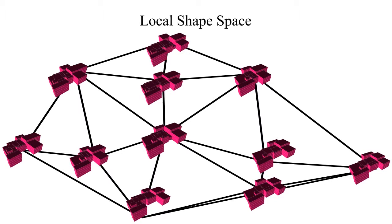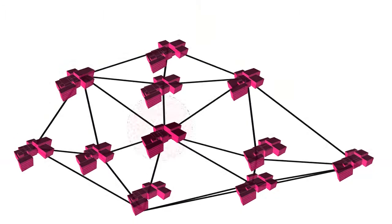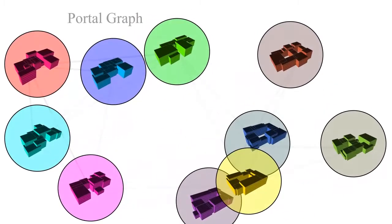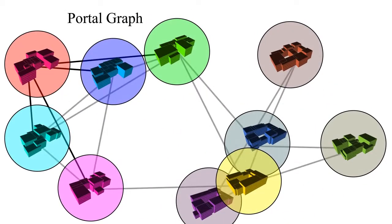The vertices are the good layouts computed previously. Multiple local shape spaces are organised in the form of a portal graph, where each node corresponds to one local shape space, and each edge encodes jumps across pairs of local shape spaces.